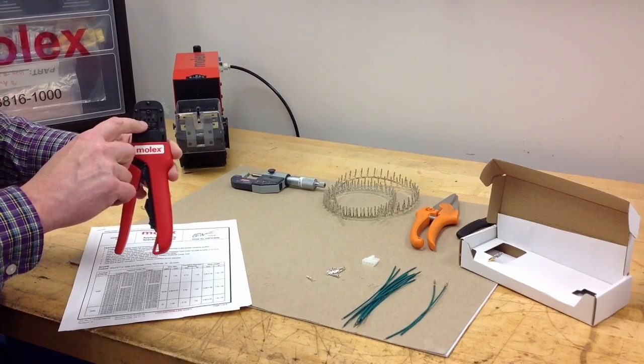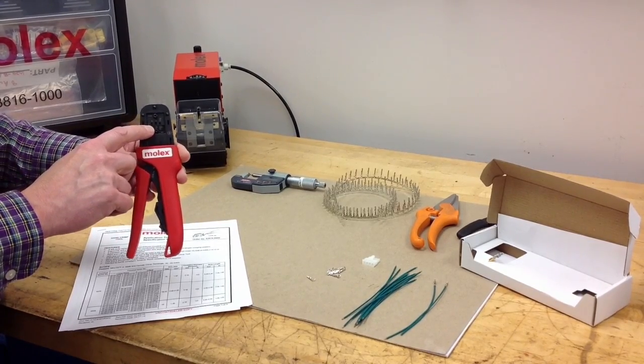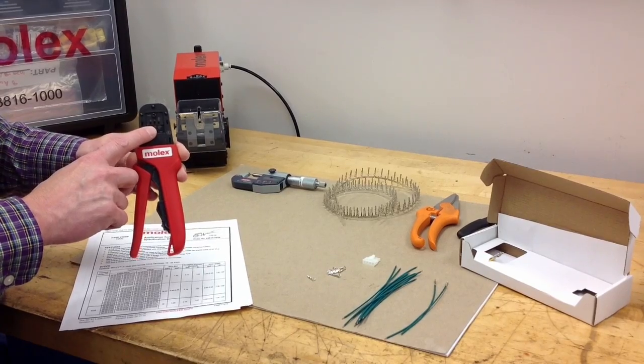The hand tool, as you see here, has three crimp profiles. Again, matching the profile to the wire gauge that you've selected is critical.